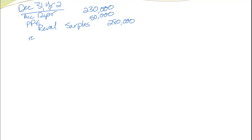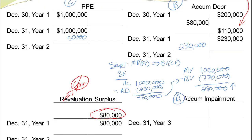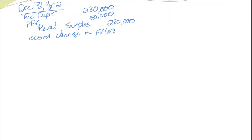This journal entry records the change in fair value. Let's put revaluation surplus into the T-accounts — $280,000. Step four to wrap this up: I have to record depreciation expense.